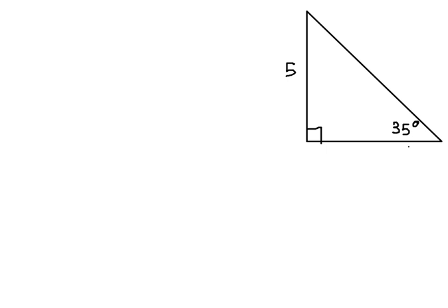Looking at this triangle, we're told that there is a right angle, a side of 5, and an angle of 35 degrees.